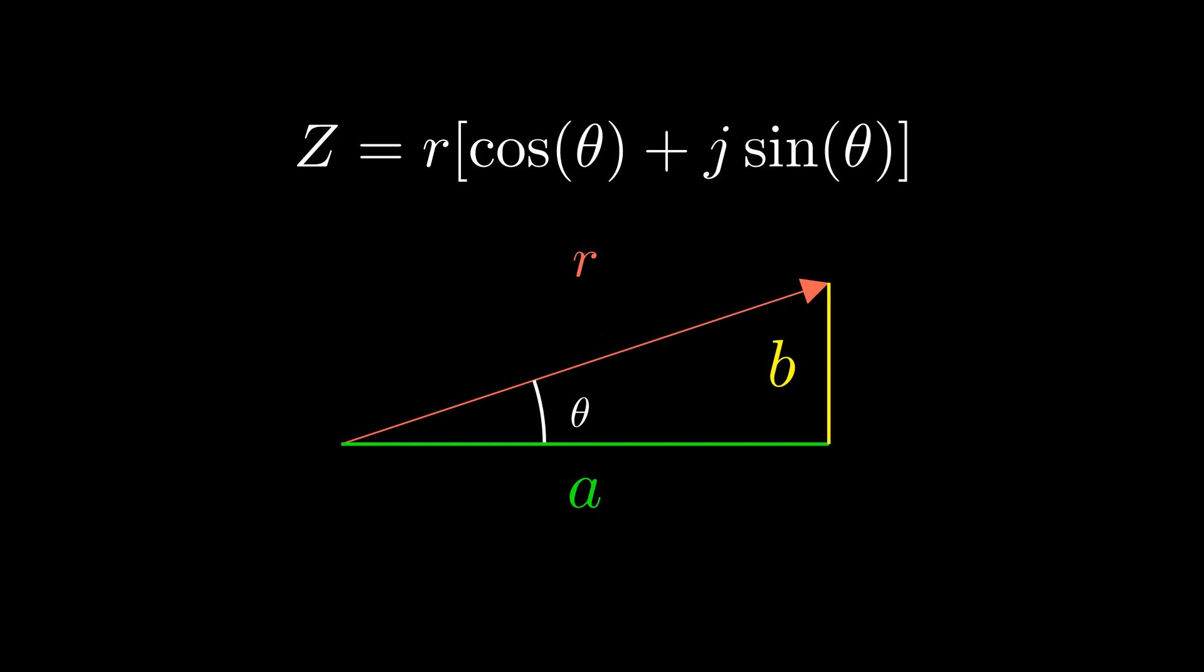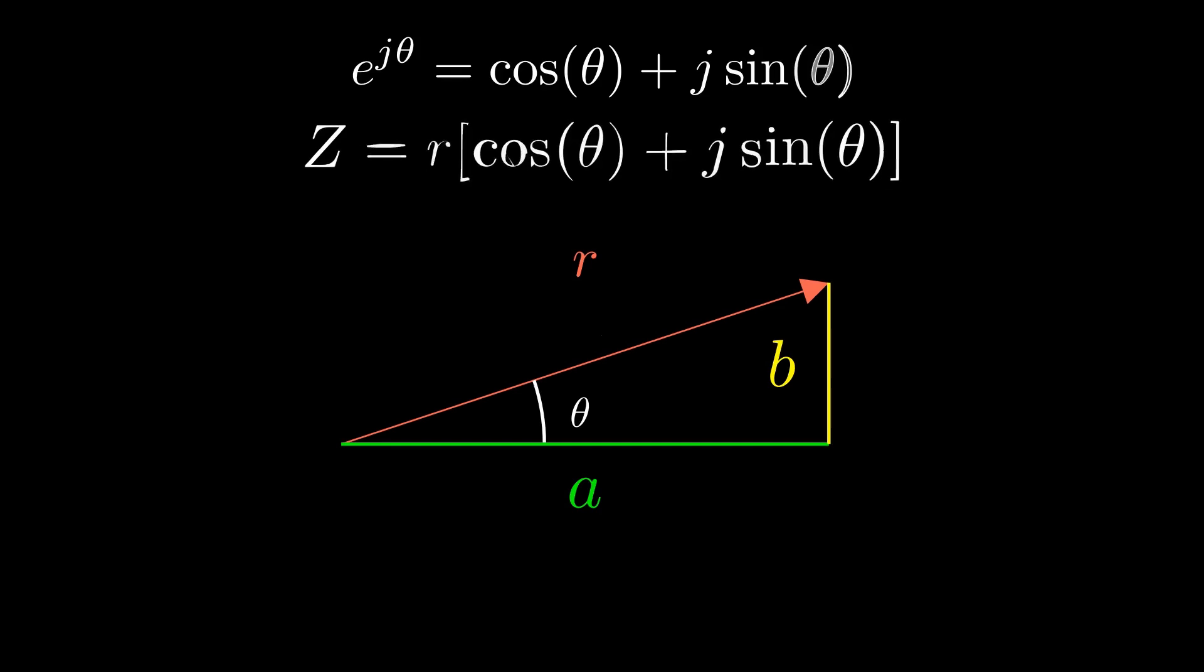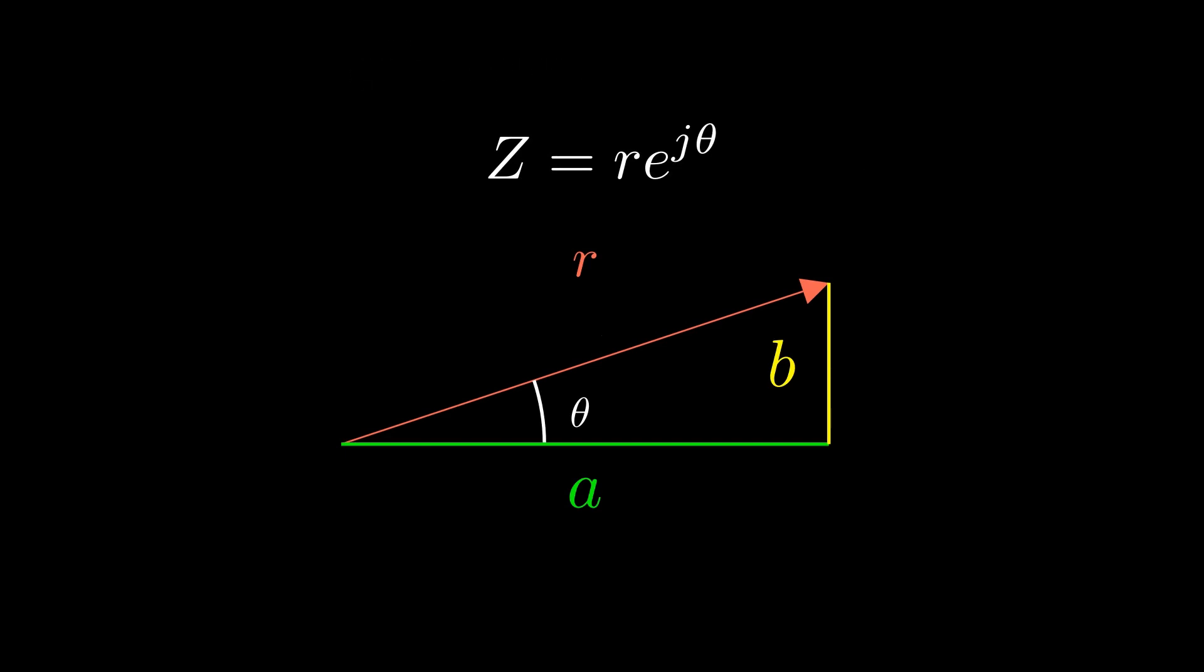If you remember Euler's formula from the beginning, you can probably see that we can just replace our sine and cosine with e to the j theta. We then condense our complex number into this expression. It can also be written in this shorthand form.